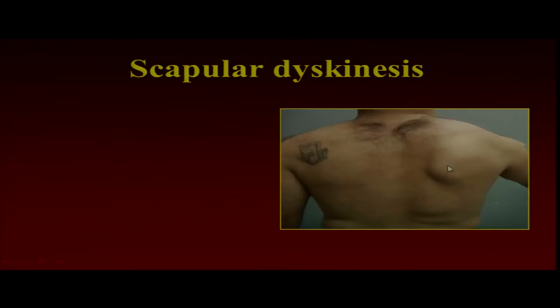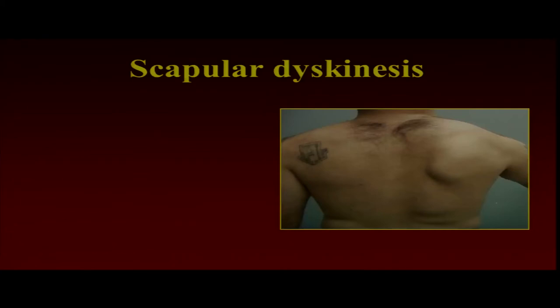Clinically, it's an observational thing — you can see it. If you see this part right here, what does that tell you about the posture of the scapula? It's anteriorly tilted, internally rotated. It turns out you can do this pretty well, and it's clinically useful. It correlates pretty well with the actual biomechanical motions. It's an altered position, and you use the medial border of the scapula as your landmark. This is what we usually call protraction.